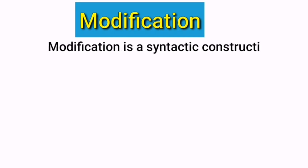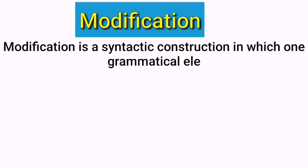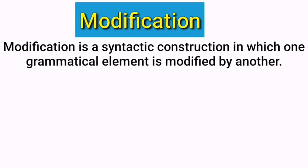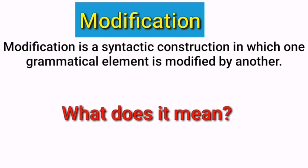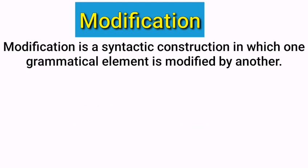Modification can be defined as a syntactic construction in which one grammatical element is modified by another. Simply, it refers to the process of adding information to a word or phrase to make it more specific or to provide additional details. This can be done through the use of modifiers, which are words or phrases that attach to another word or phrase to change its meaning.